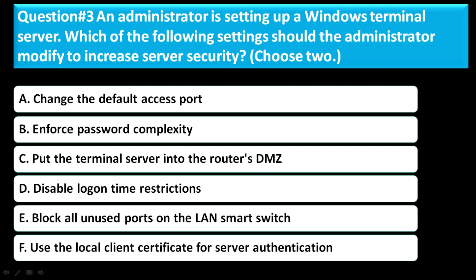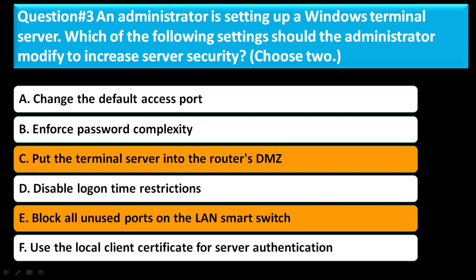Question 3: An administrator is setting up a Windows terminal server. Which of the following settings should the administrator modify to increase server security? Choose two. Option A: change the default access point. Option B: enforce password complexity. Option C: put the terminal server into the router's DMZ. Option D: disable logon time restrictions. Option E: block all unused ports on the LAN smart switch. Option F: use the local client certificate for server authentication. The correct answer is C and E — put the terminal server into the router's DMZ, and block all unused ports on the LAN smart switch.